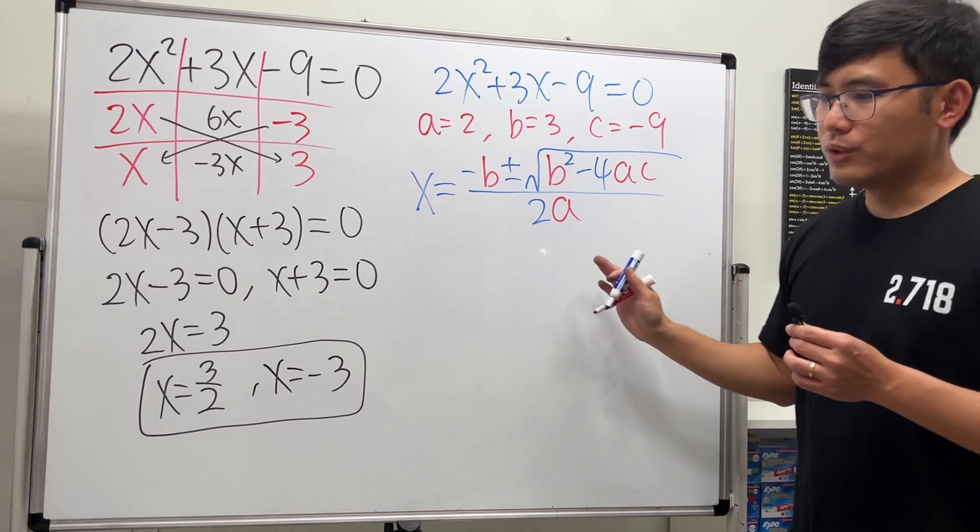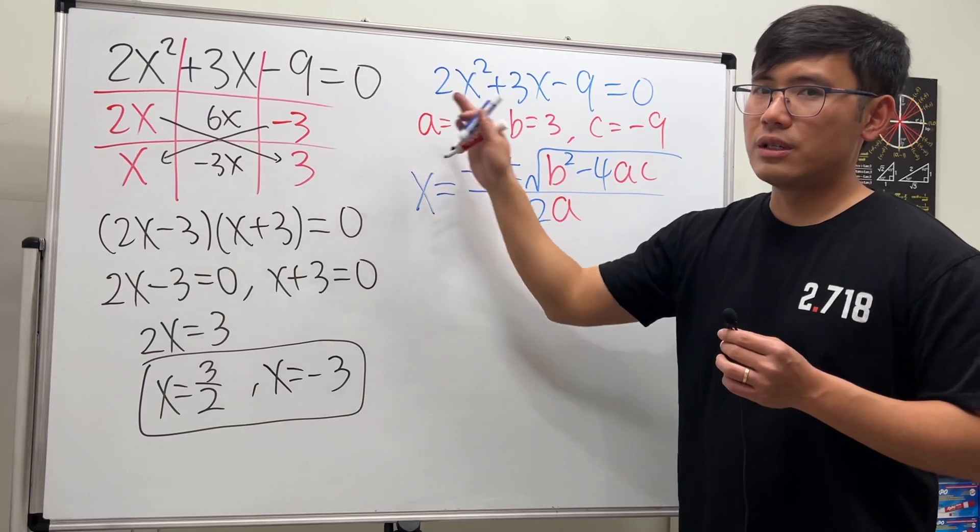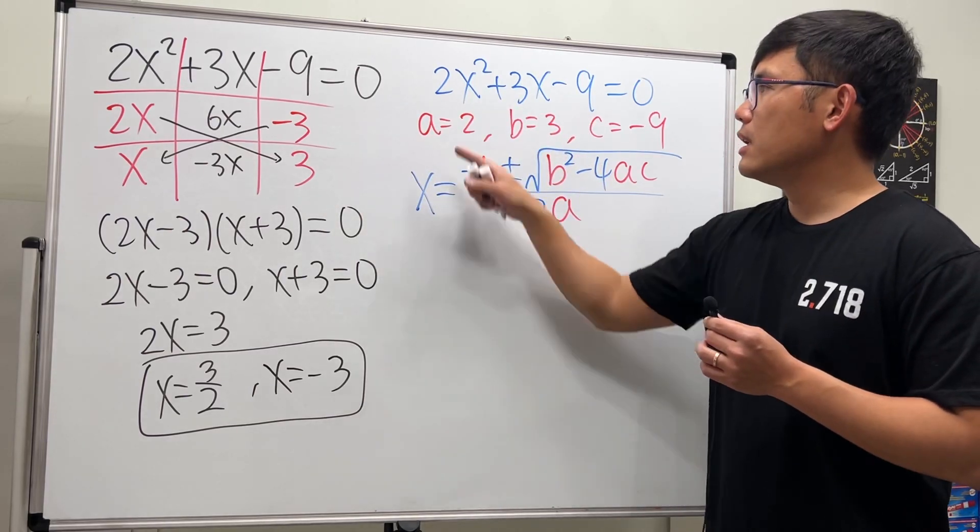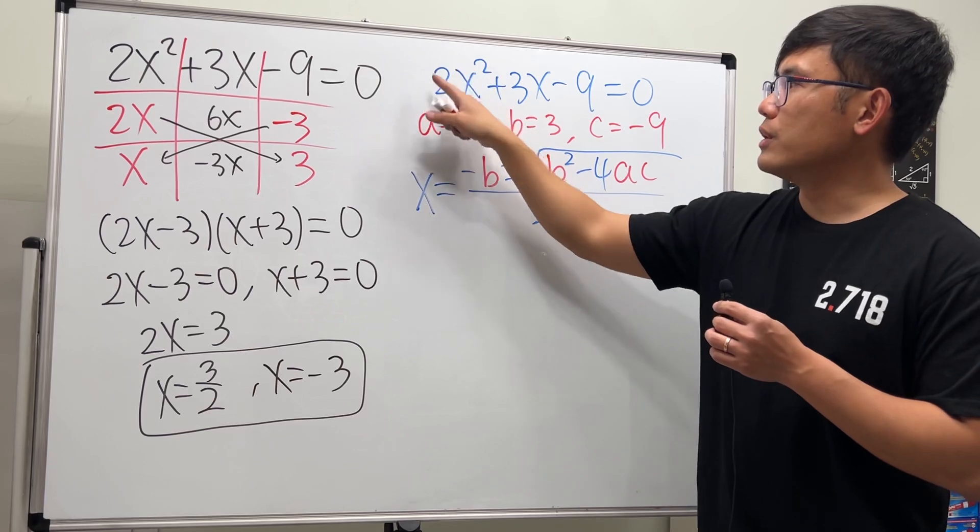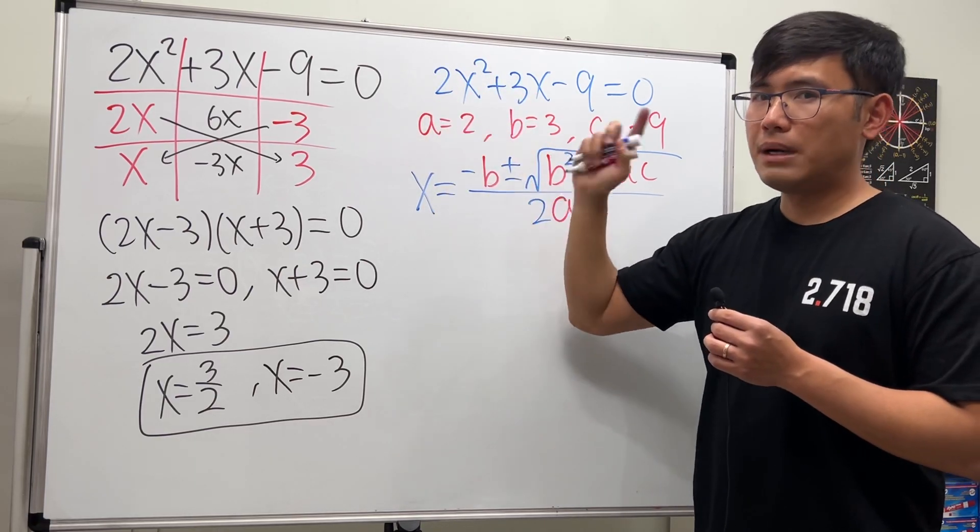By the way, I will also mention here, I wouldn't try to use the completing the square method to solve this because not only do we have a coefficient besides one—we have the 2 in front of the x squared—but also this is odd.